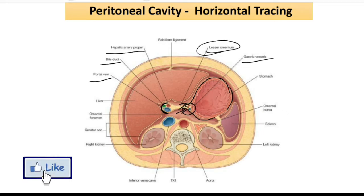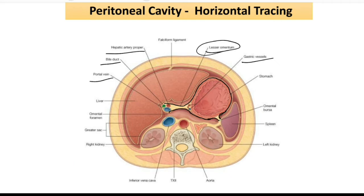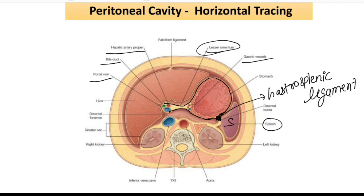You can see these two layers — one layer and the second layer — they are going toward the spleen. These two layers going from the stomach toward the spleen will form a ligament known as the gastrosplenic ligament.